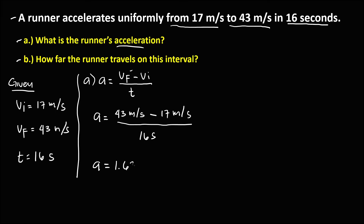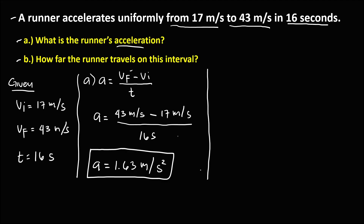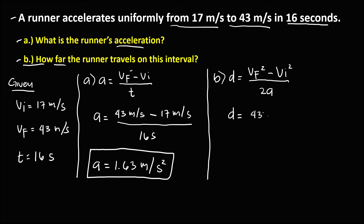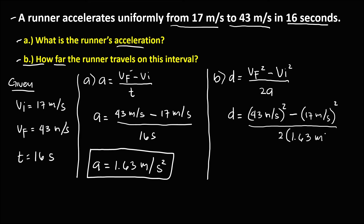So 43 minus 17 equals 26, divided by 16, equals 1.63. The acceleration is 1.63 meters per second squared. Now to find the distance, the formula for displacement is: final velocity squared minus initial velocity squared over 2 times the acceleration. The final velocity is 43 m/s and the initial velocity is 17 m/s.